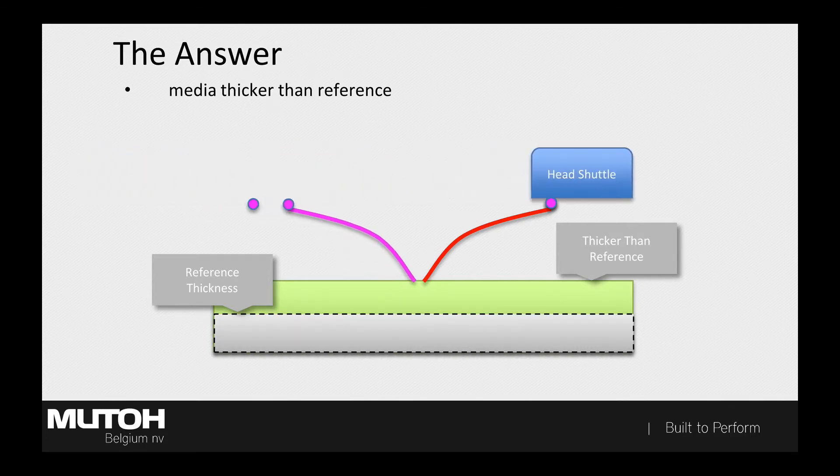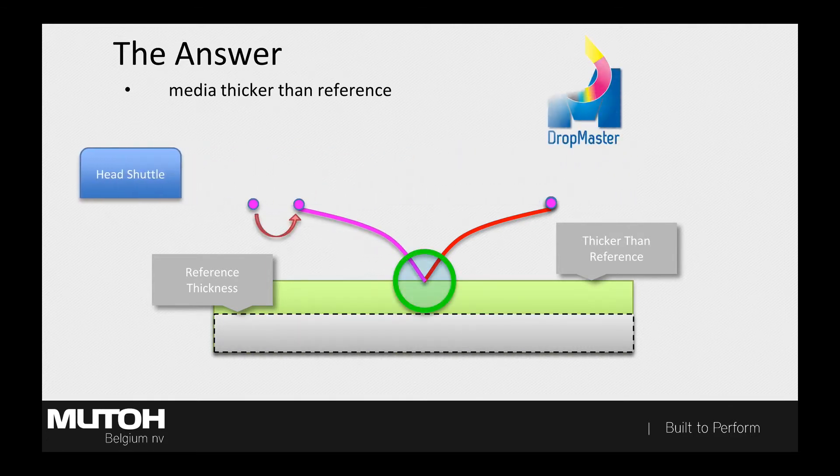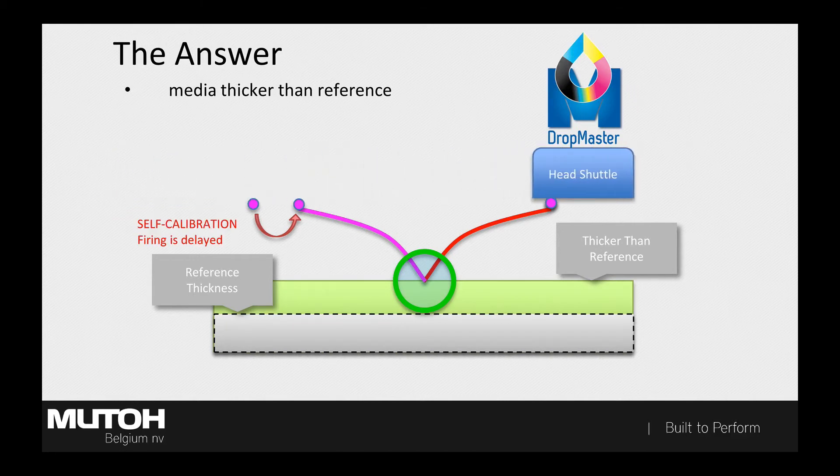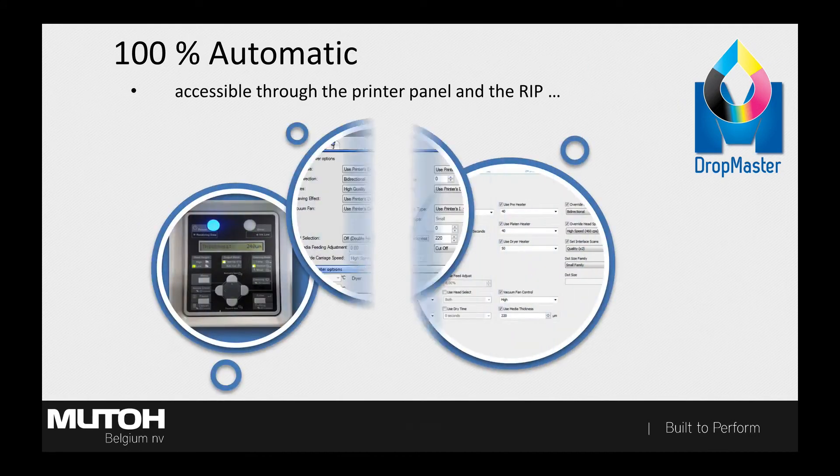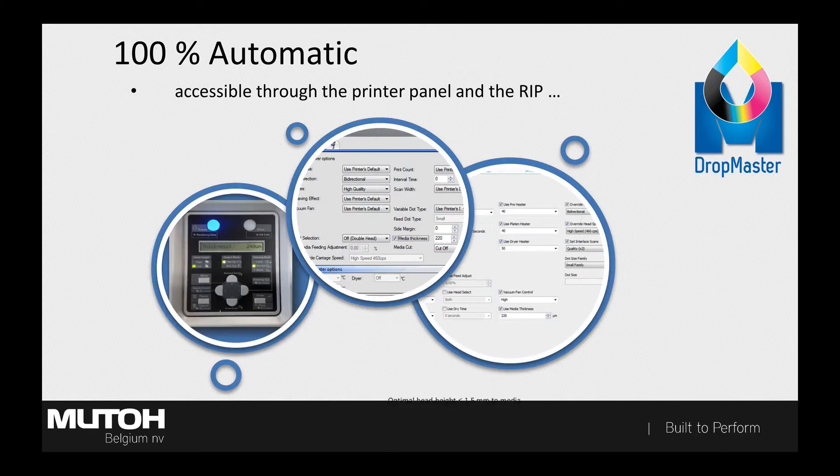There is no need to print a test pattern or to measure anything. It's an all self-calibrating system. The only two conditions to make Dropmaster successful is to embed the thickness value into your media profiles and make sure the print head is within focusing distance of the media by selecting the appropriate head height. Both the rip and the printer will take it from there. Very easy.